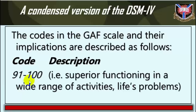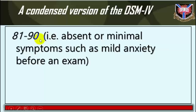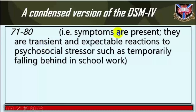GAF codes: 91–100 indicates superior functioning in a wide range of activities with no life problems. 81–90 indicates absent or minimal symptoms, such as mild anxiety before exams. 71–80 indicates that symptoms are present but are transient and expectable reactions to psychosocial stressors, such as temporarily falling behind in school work.